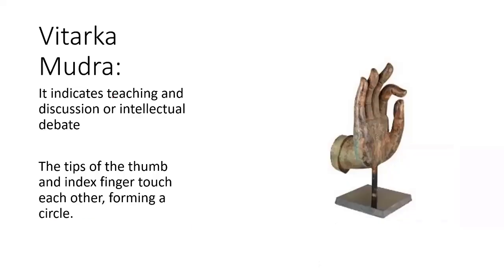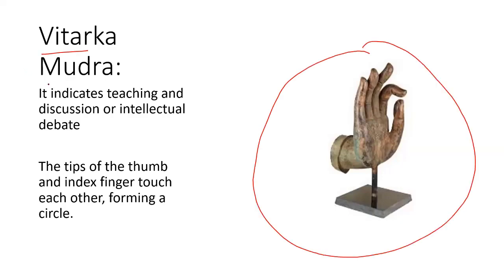We will discuss the different mudras present in Buddhist Buddha's culture. The first is Vitarka Mudra. In Vitarka Mudra, the index finger and thumb are touching each other and forming a circle. This mudra indicates teaching, discussion, or intellectual activity.